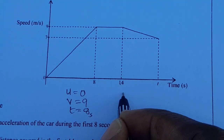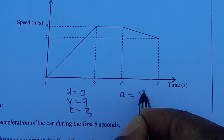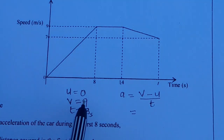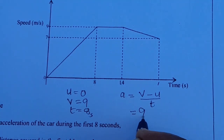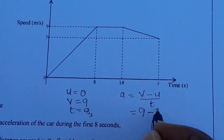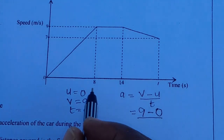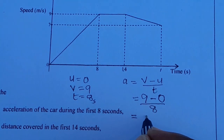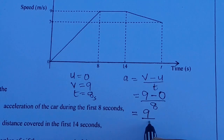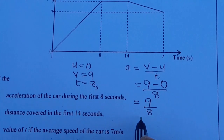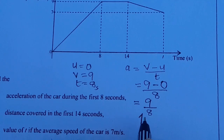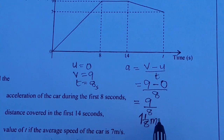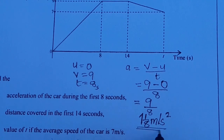Acceleration is given by the formula: acceleration equals final velocity minus initial velocity, over time. So we have 9 minus 0, over 8. That gives us 9 over 8, which is 1 remainder 1 over 8. So the acceleration is 1 and 1/8 meters per second squared.